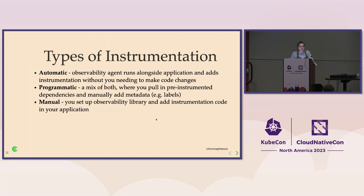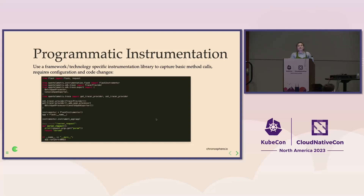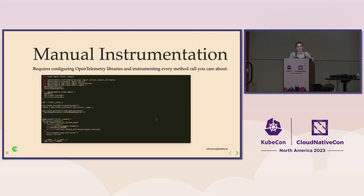Automatic instrumentation is great because you don't have to make code changes. If you've got service mesh running, that's something you kind of get out of the box with tracing. We'll have a lab on auto instrumentation, programmatic, and manual. So no worries about catching up on the code there.